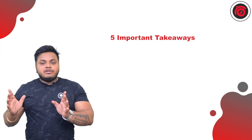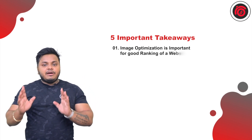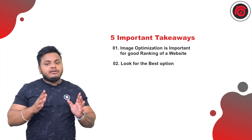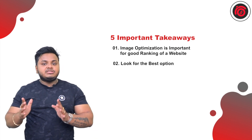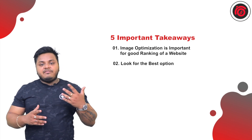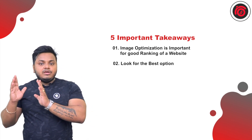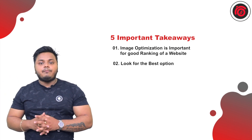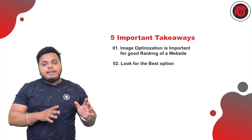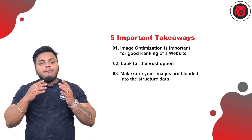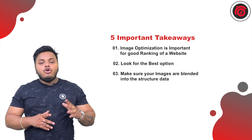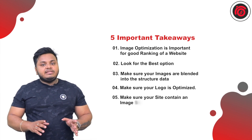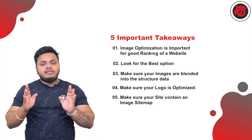Five important takeaways from this episode: First, image optimization is very important for good ranking of a website. Second, there are tons of ways for optimizing your images — look for the best option possible. My advice is to always fill up your alt text, make use of CDN, and make sure that your images are properly resized with compact resolution. Third, make sure that your images are blended into the structured data. Fourth, always make sure that your logo and favicon are optimized. Fifth and last, make sure your site contains an image sitemap.